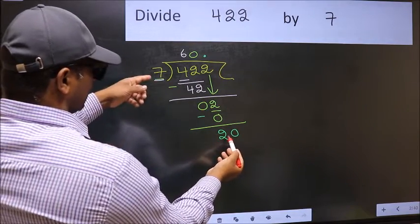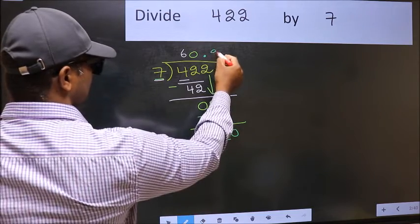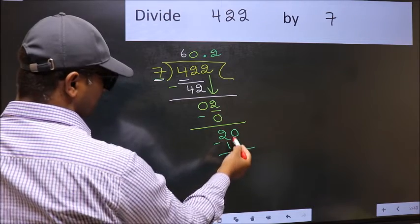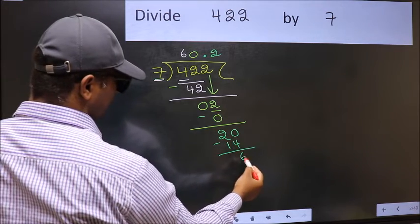A number close to 20 in 7 table is 7, 2 is 14. Now you should subtract. 20 minus 14, 6.